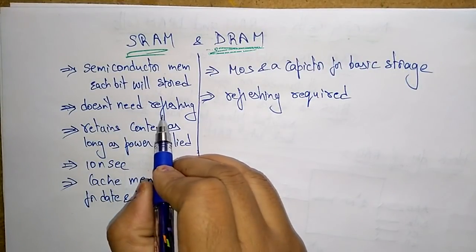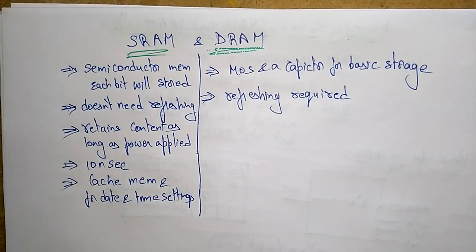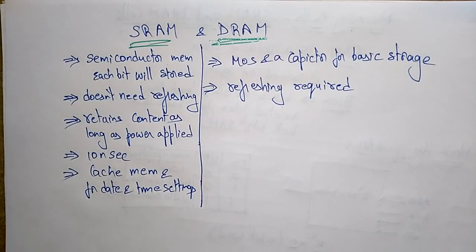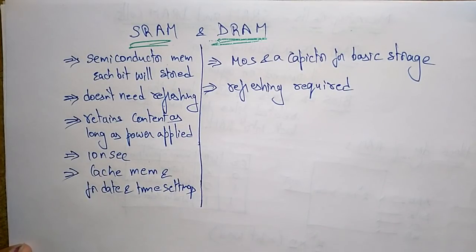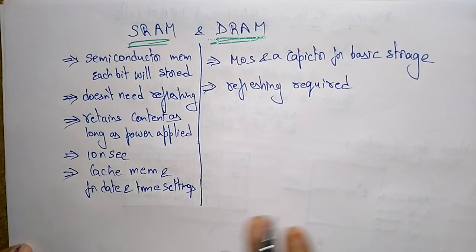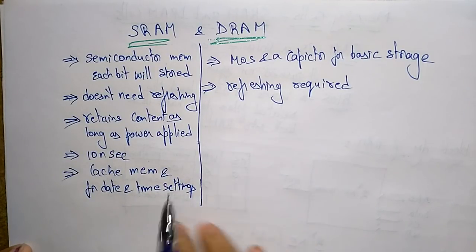SRAM does not require any refreshing circuit — it automatically refreshes whenever data is being accessed. For example, if you are working on a Word or PowerPoint file on a system with SRAM, it automatically refreshes to avoid data loss. In contrast, DRAM requires a periodic refresh cycle due to leakage current. To overcome this disadvantage of DRAM, we use SRAM.